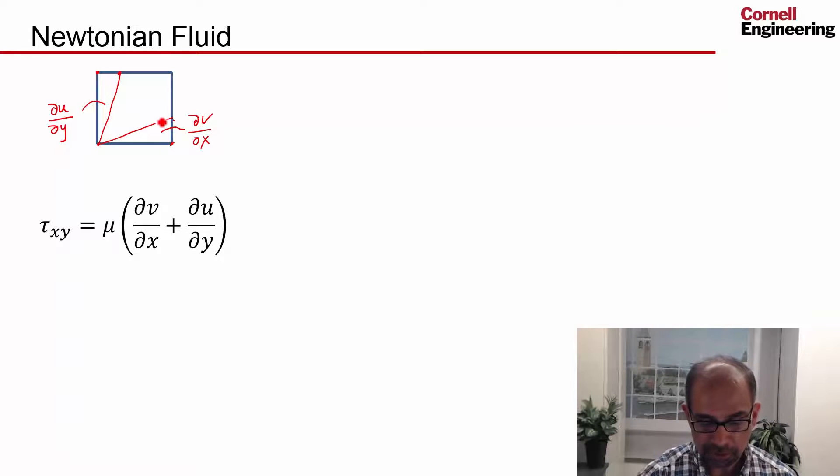And for a Newtonian fluid, the shear strain rate, so the sum of these two, and this gives you a measure of the skewing, is related to the shear. So that's the shear. And similarly, on these faces, it's a linear variation.